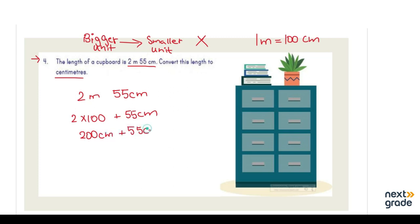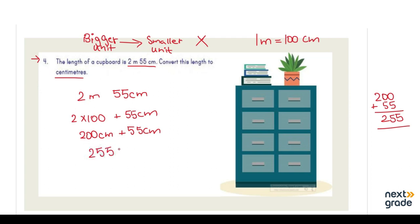Now we add both numbers: 200 centimeters plus 55 centimeters. Let's do it in rough — 200 plus 55 equals 255 centimeters. So we write that the length of the cupboard is 255 centimeters.